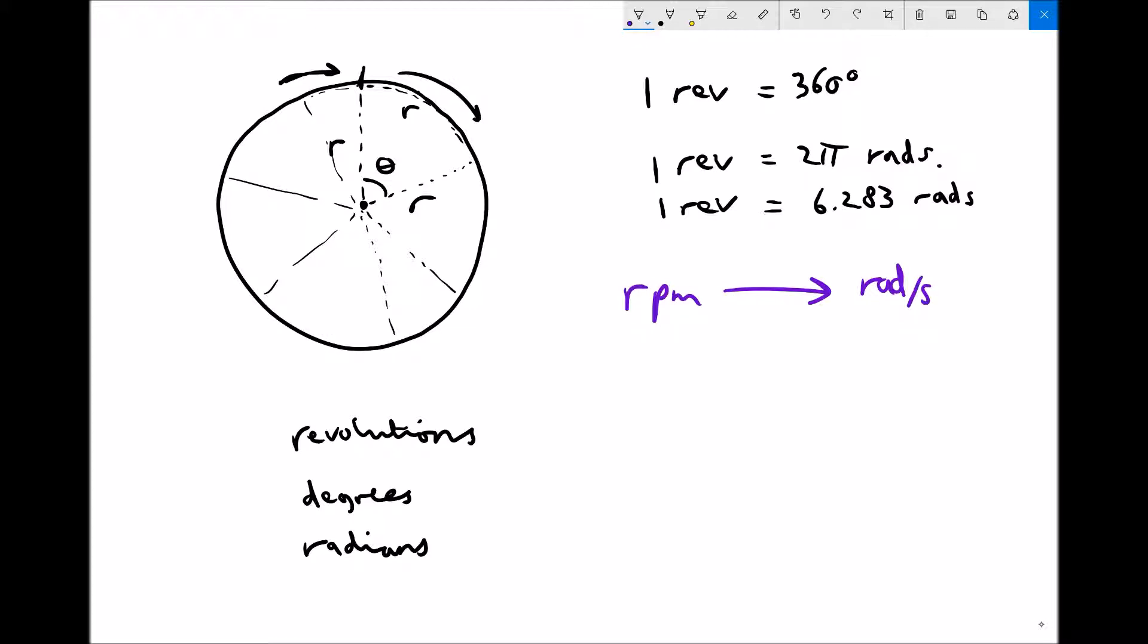If we're given a speed of 2,500 revolutions per minute, we're going to go through a two step process. The first thing that we're going to do is convert that into rads per minute, and once we have that in rads per minute we're then going to convert that to rads per second.